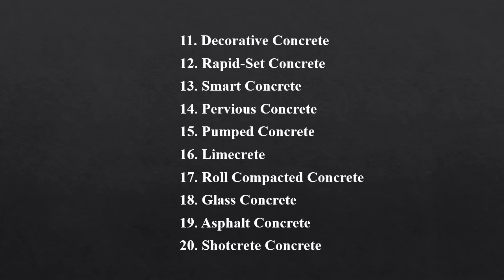Lime grit uses lime instead of cement and has many environmental benefits as it is easily cleaned and renewable. Roll compacted concrete is found in road works, airports, runways, car parks, pavements and industrial servings. Glass concrete is commonly used in large format slabs for flooring or decorative purposes and contains shining and colored glass. Asphalt concrete, mainly called blacktop, is frequently used on roads, airport runways, highways, parking lots and sidewalks — basically anywhere pavement is needed.